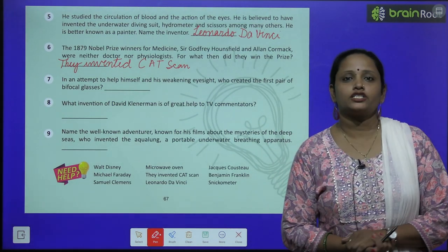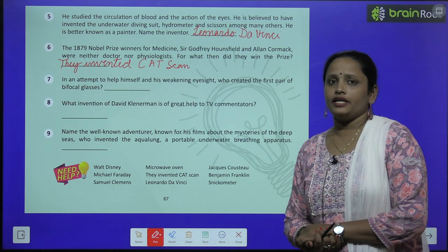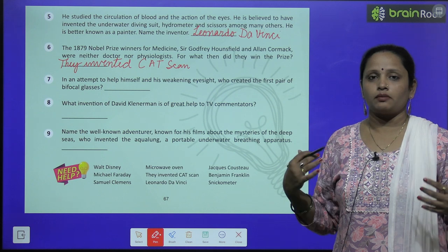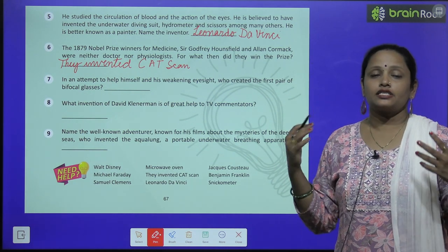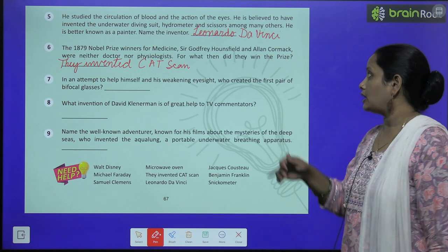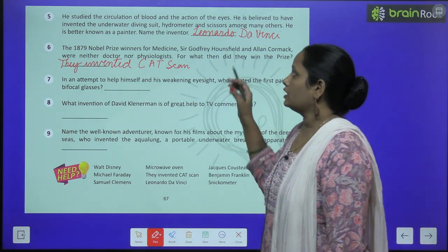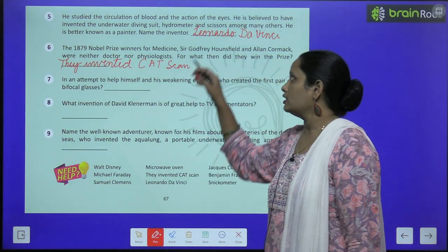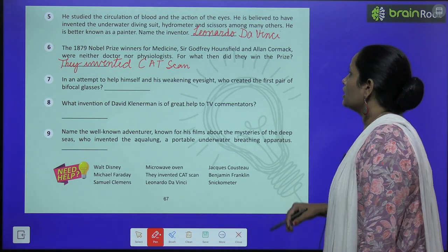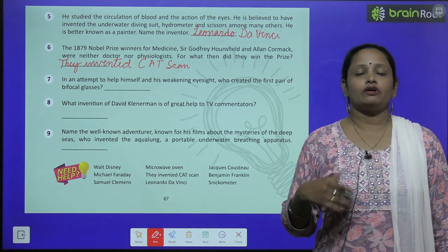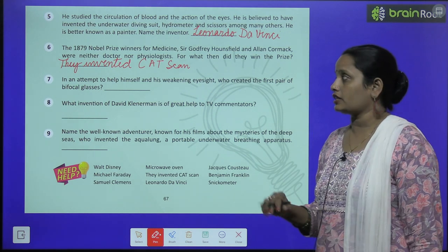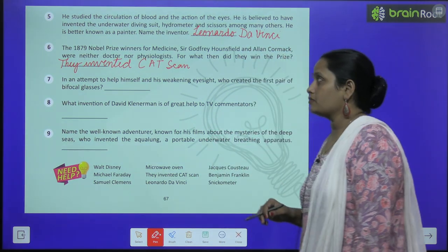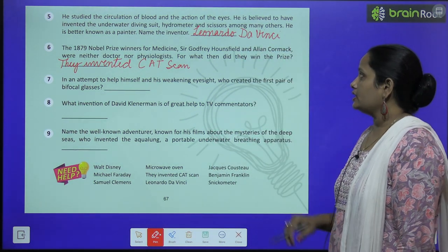Now the fifth one: he studied the circulation of blood and the action of the eyes — इन्होंने blood का circulation हमारे body में होता है उसके बारे में पढ़ा और हमारी eyes के जो actions होते हैं उसके बारे में पढ़ा। He is believed to have invented the underwater diving suit — ऐसा कहा जाता है कि इन्होंने underwater diving suit भी invent किया था। Hydrometer and scissors among many others — इसके अलावा इन्होंने hydrometer और scissors को भी invent किया था। He is better known as a painter — and he is Leonardo da Vinci.